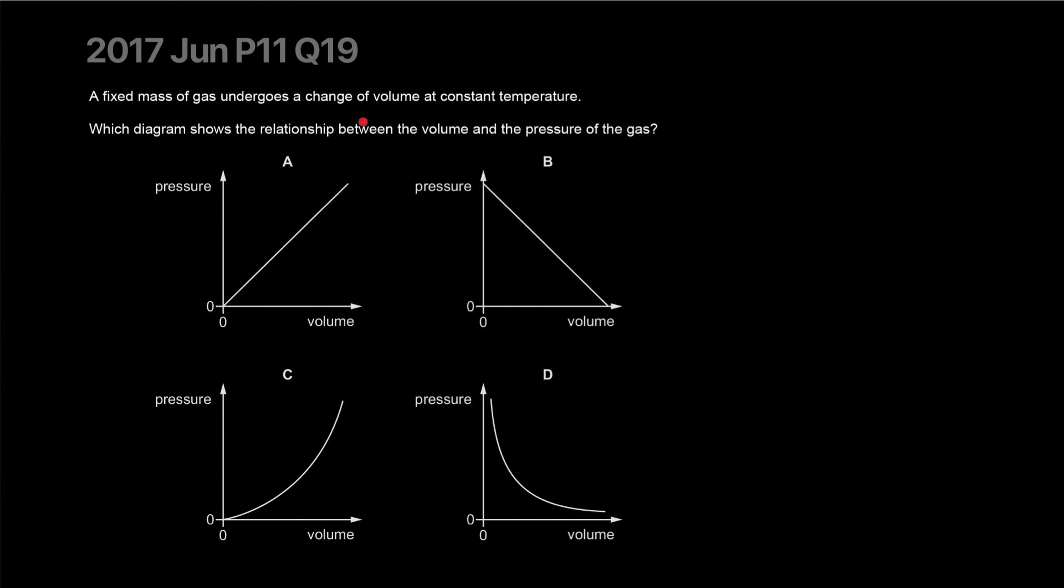A fixed mass of gas undergoes a change of volume at constant temperature. Which diagram shows the relationship between the volume and the pressure of the gas? Now volume and the pressure of gas. So the product of pressure of a gas and the volume is actually a constant. So pressure is inversely proportional to volume. And this graph when you try to draw it is simply trying to say high pressure will give you low volume. Low pressure will give you high volume but it's not as smooth. So it's gonna look like this. Answer is D.